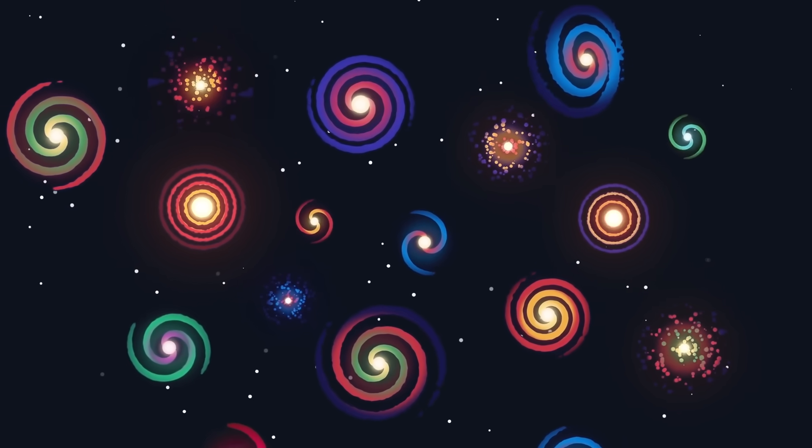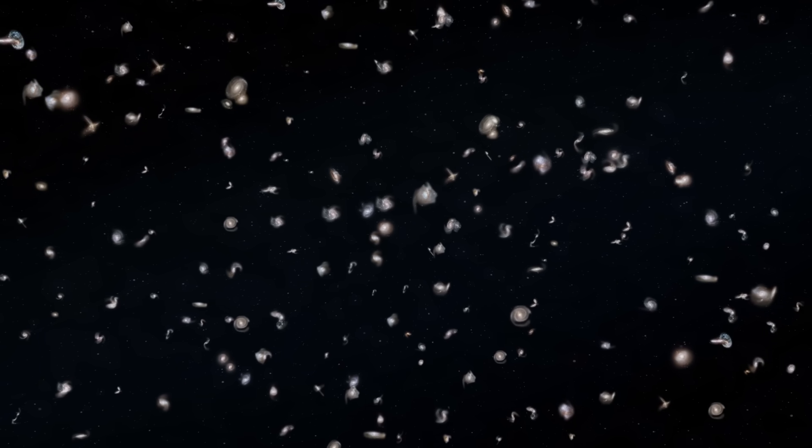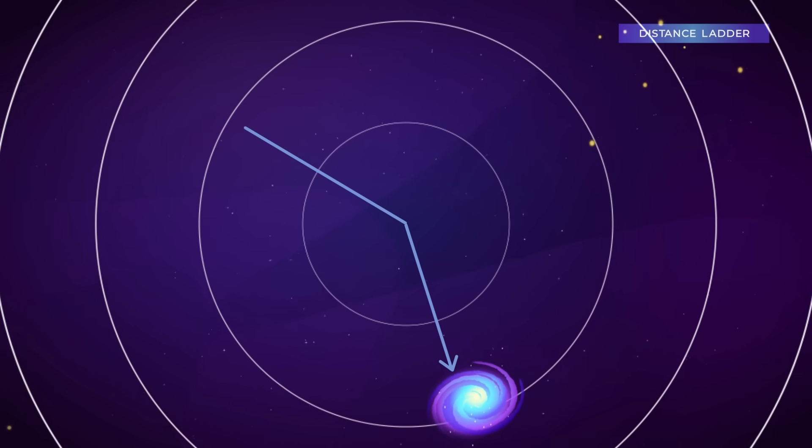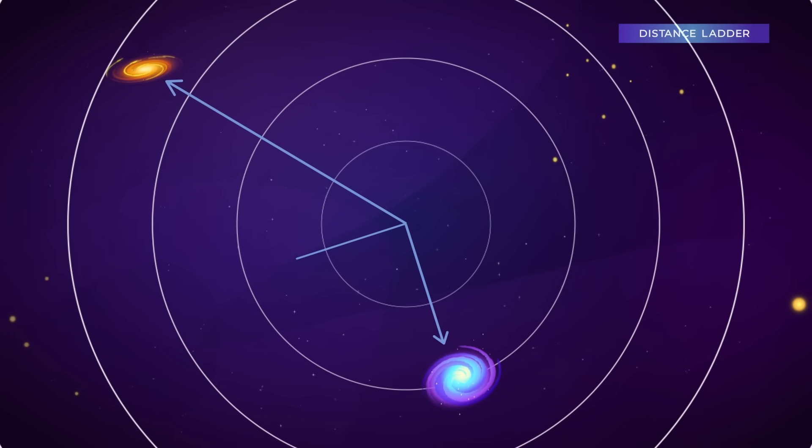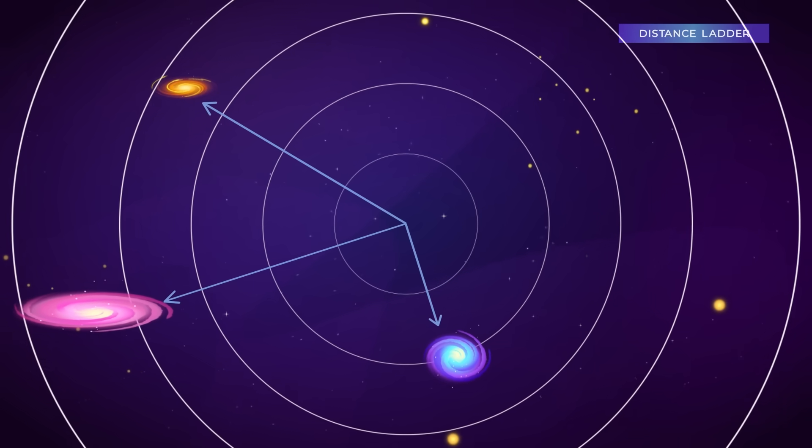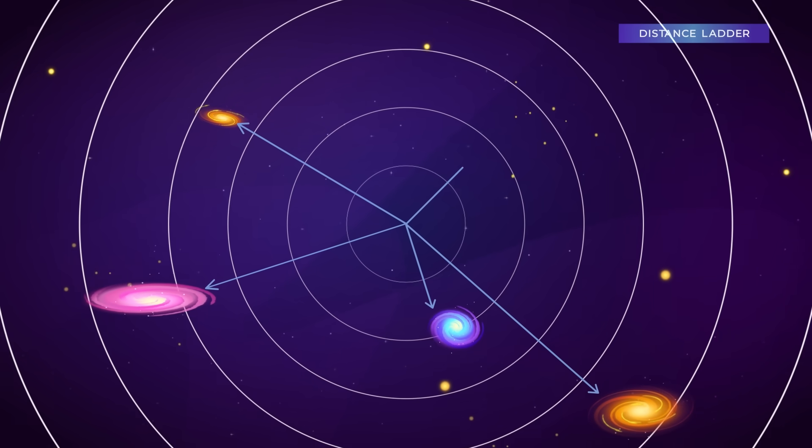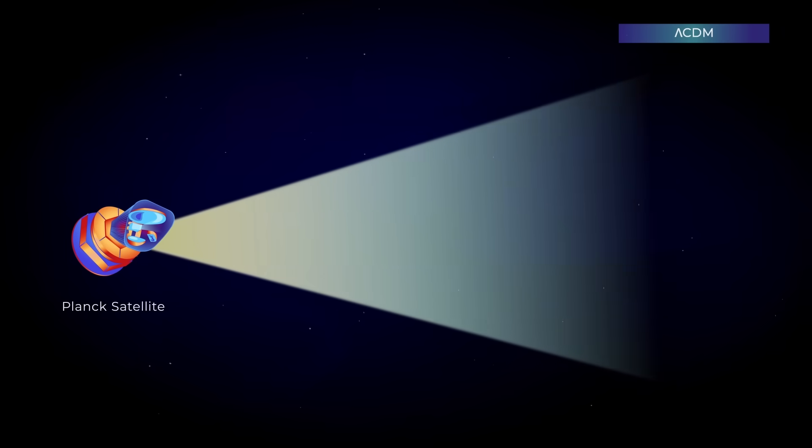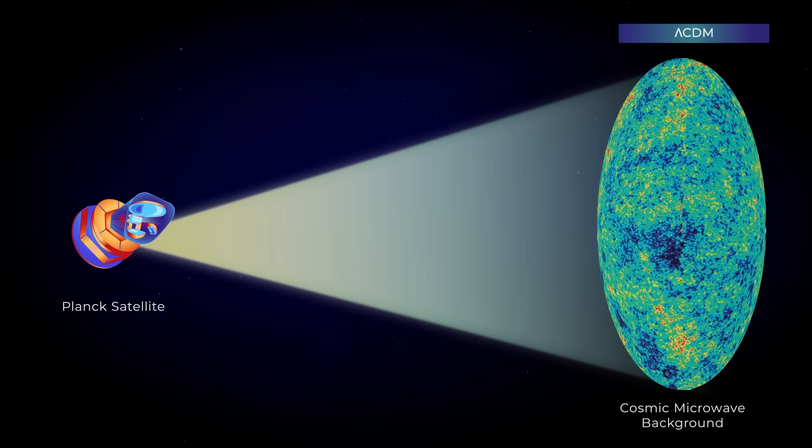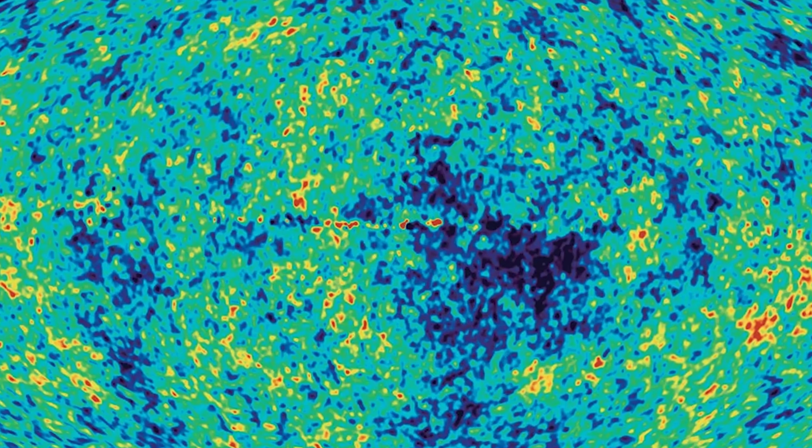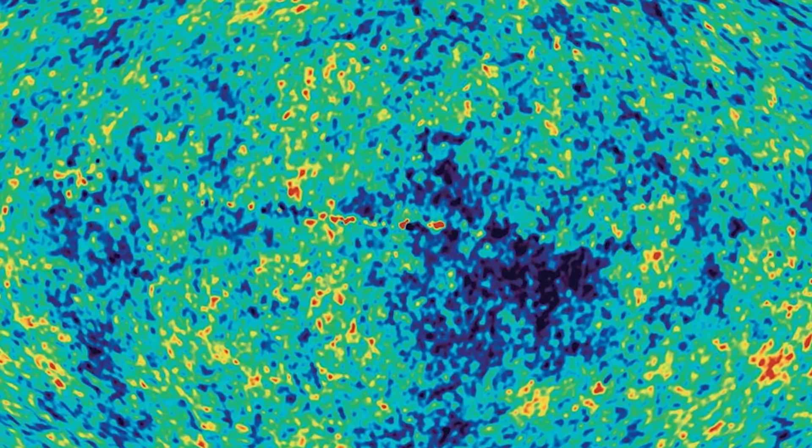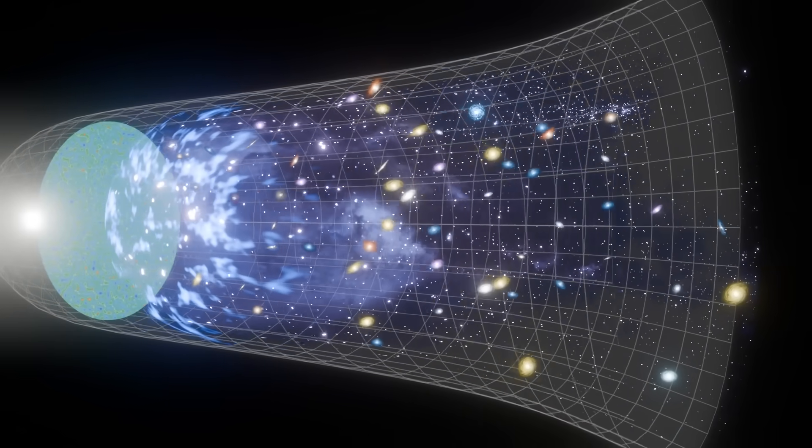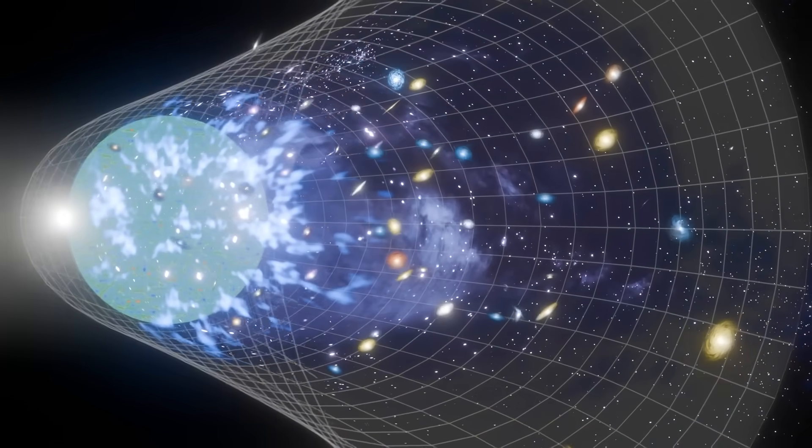There are two ways to measure this expansion. The first is the direct method, which involves looking at the nearby galaxies. Astronomers use special types of variable stars and supernovas to calculate distances in space. Then, they measure how fast these galaxies are moving away from us. This gives one value for the Hubble constant. The second is the indirect method, which involves looking at the cosmic microwave background, the afterglow of the Big Bang. This light has been traveling for over 13.6 billion years and gives us a snapshot of the early universe. Using a detailed model of how the universe has evolved since then, scientists can estimate what the Hubble constant should be today.